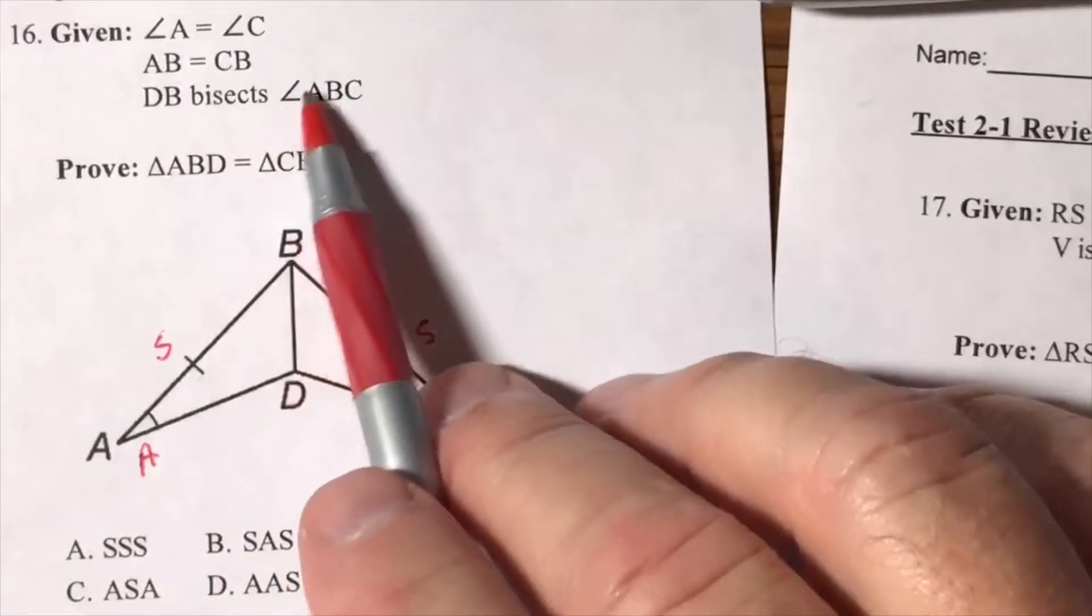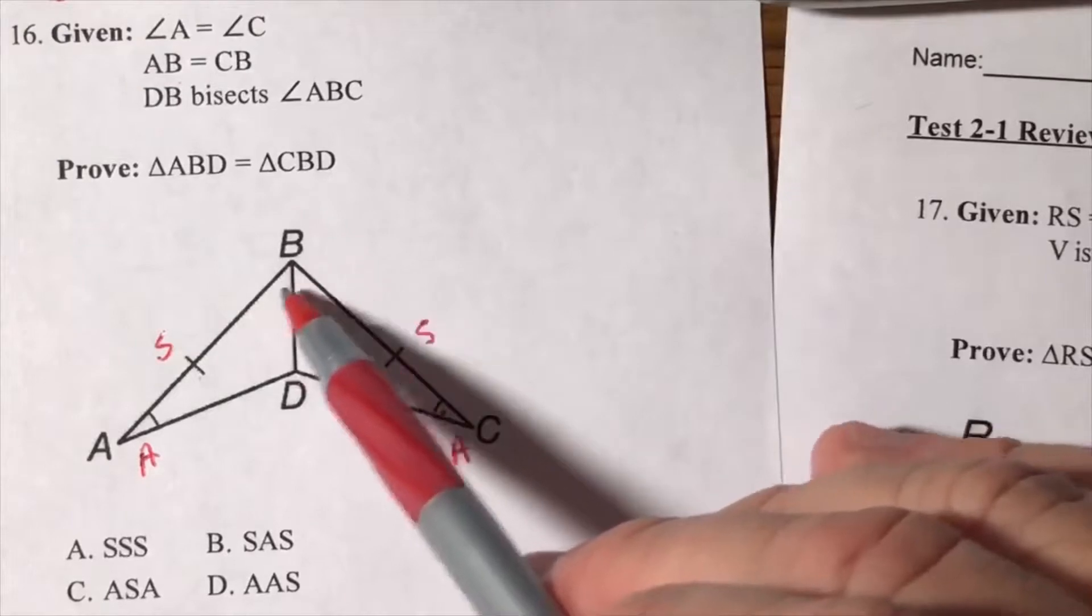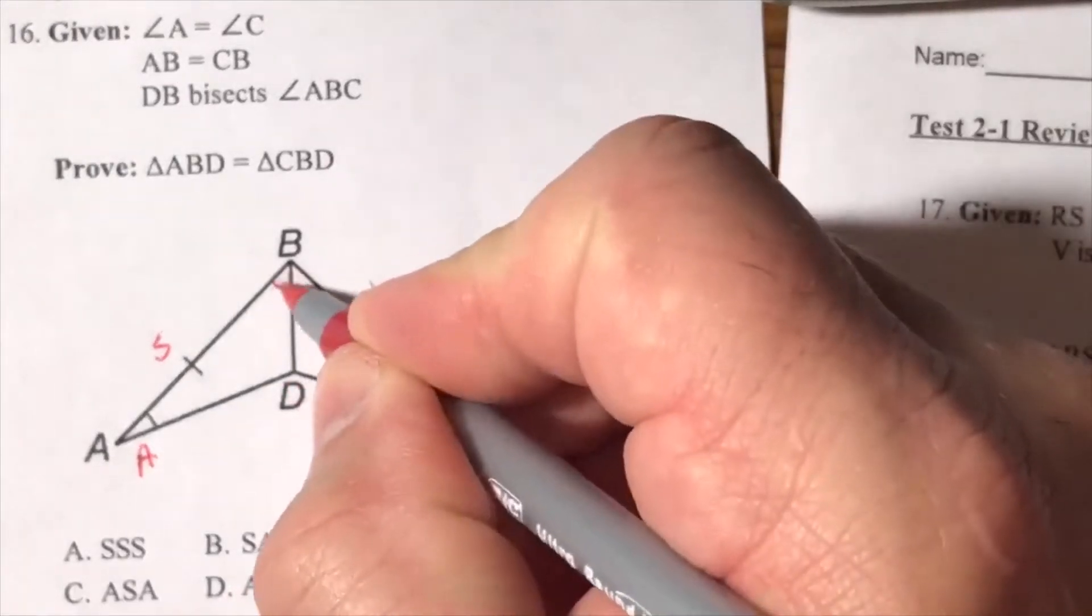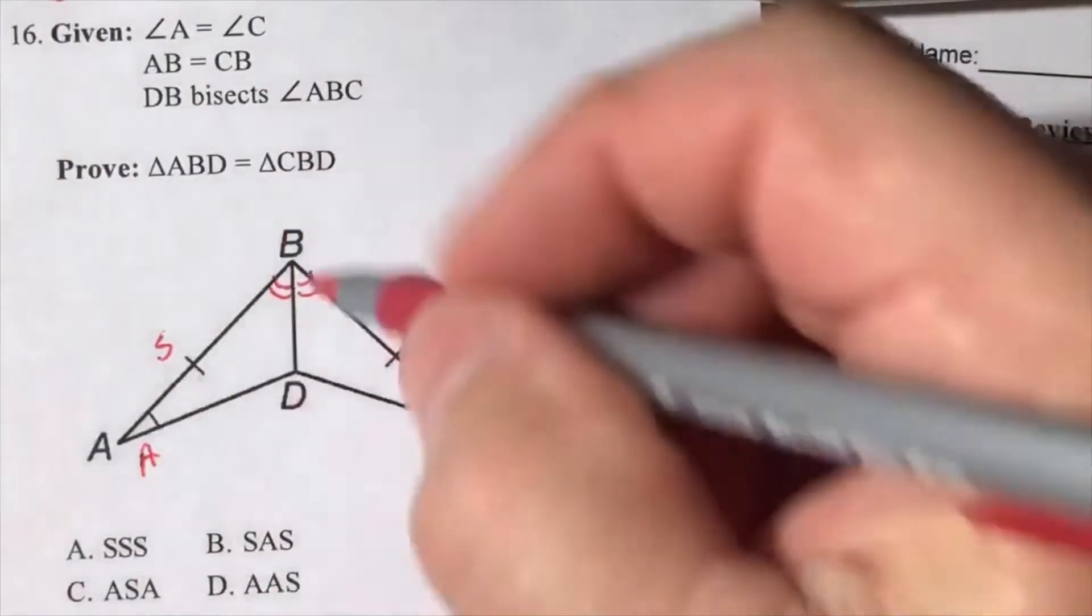DB bisects angle ABC, so ABC come back to B. My bisector is happening up here. That creates two equal parts, so if I'm bisecting an angle, I'm going to get two angles.